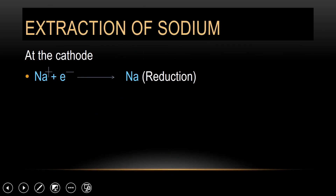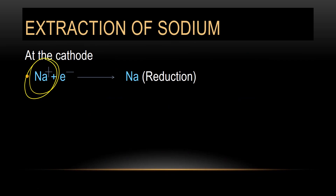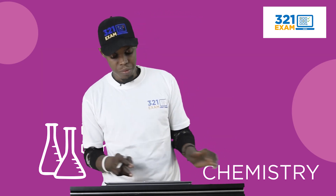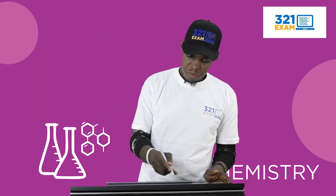Now at the cathode, the sodium ion — sodium here has 11 electrons, sodium ion has 10. So it is accepting one electron to become sodium metal. Reduction takes place. As the sodium ion moves to the cathode, the cathode gives it an electron to become sodium, and it gets deposited as sodium. That is reduction.